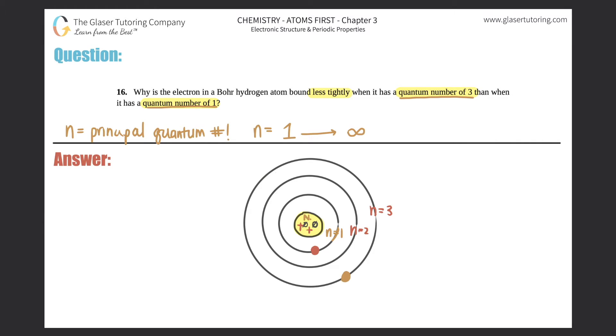So they're asking why is the electron in the Bohr hydrogen model bound less tightly when it's three versus one? Well, what do you think? When you have an electron in n equals one, you're super close to the nucleus. So the n equals one electron is super close to the nucleus.